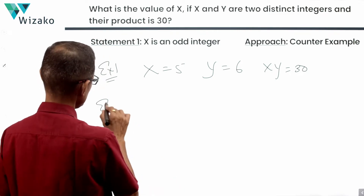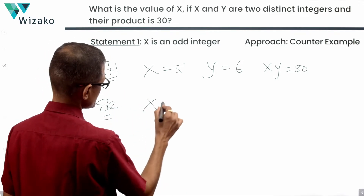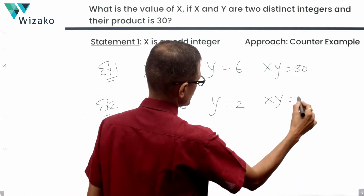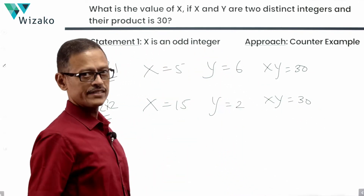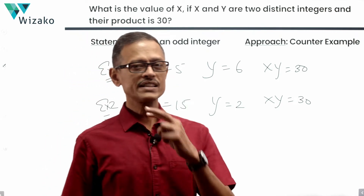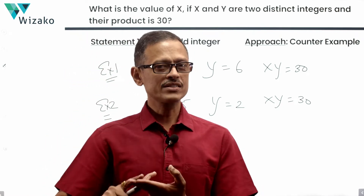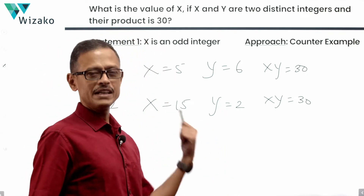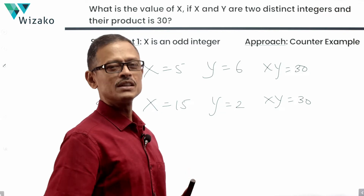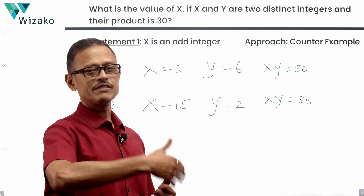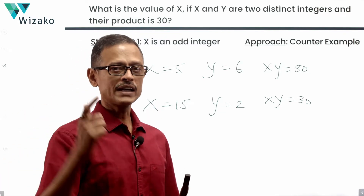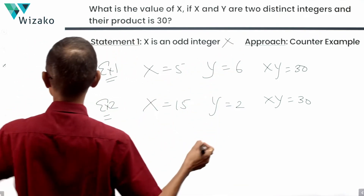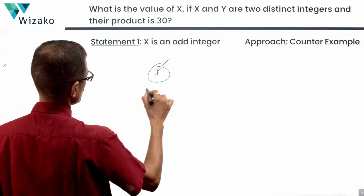Is there another case? Example two: x = 15, y = 2, x·y = 30, and x is an odd integer. We've found two instances where x ≠ y, product is 30, and x is odd — it could be 5 or 15, among many more. Statement one alone has not given us a unique value, so statement one alone is not sufficient. Rule out answer options A and D.